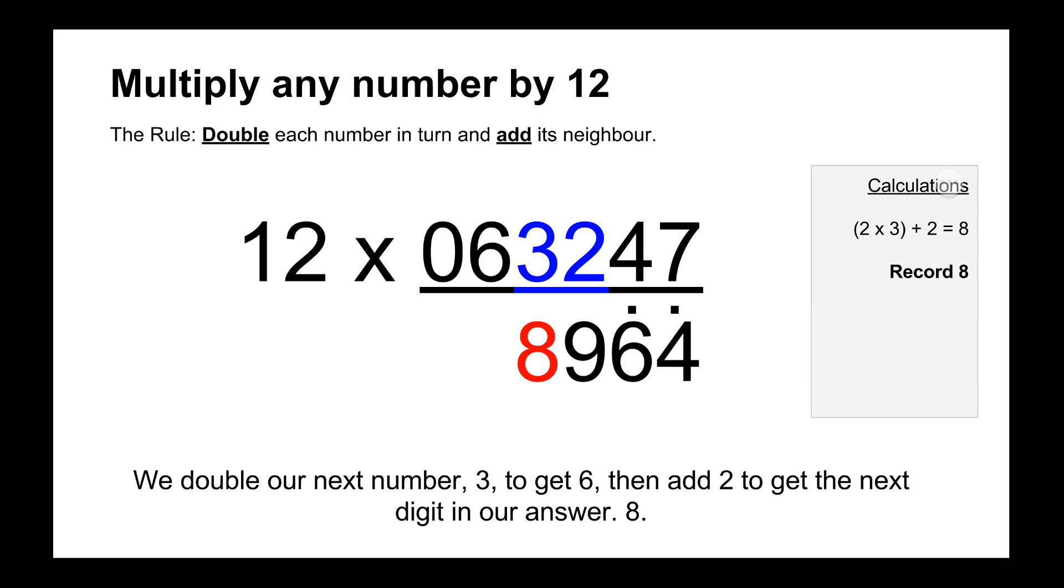And then going across again so we do 3 times 2 or 3 doubled first which is 6 plus 2 is 8, and there's no dot above the 9 because we didn't carry anything over so we just record the 8.